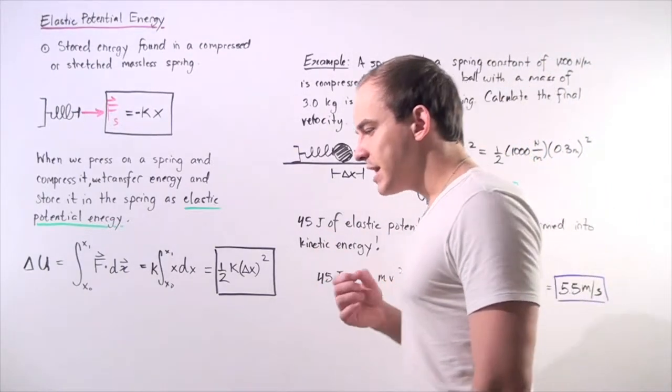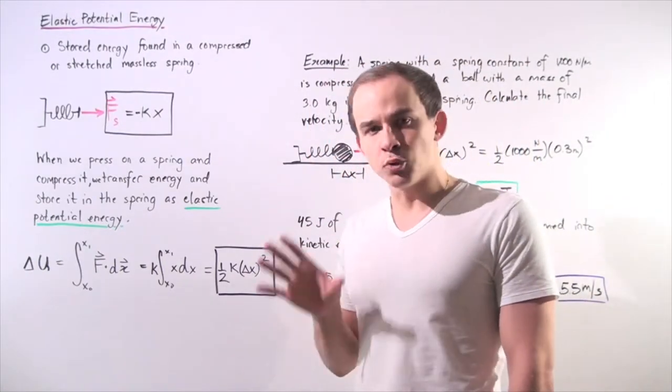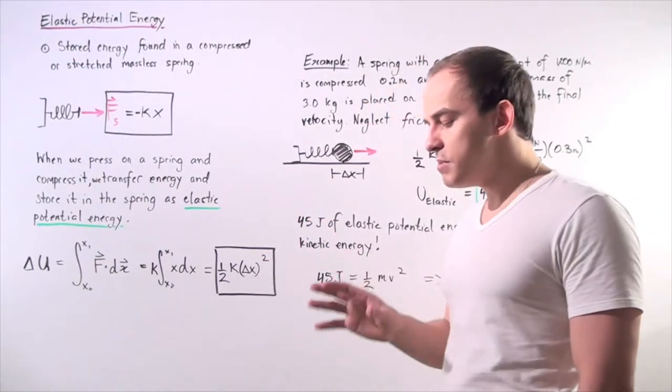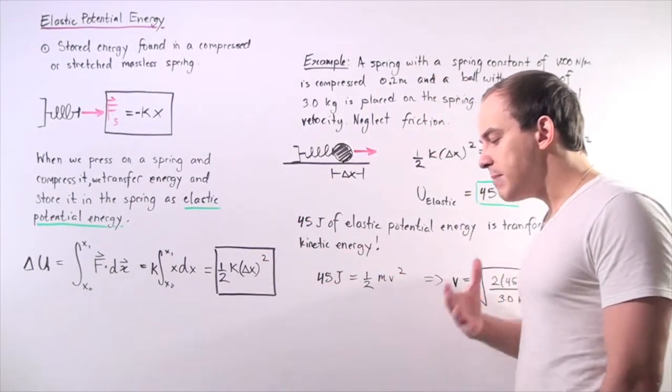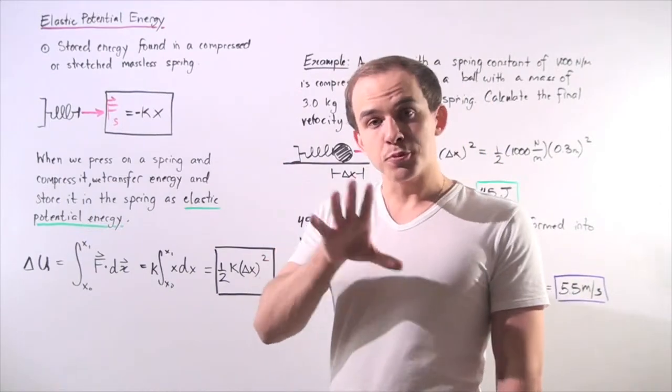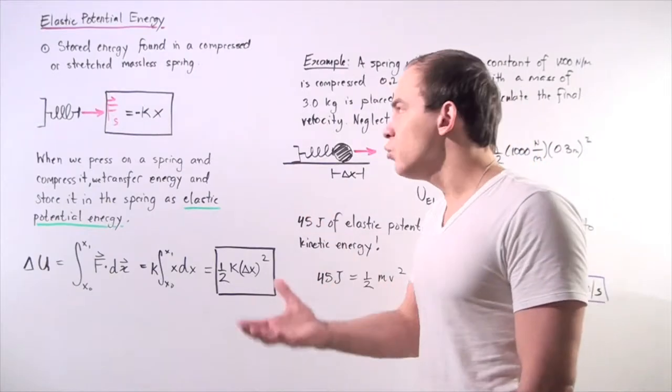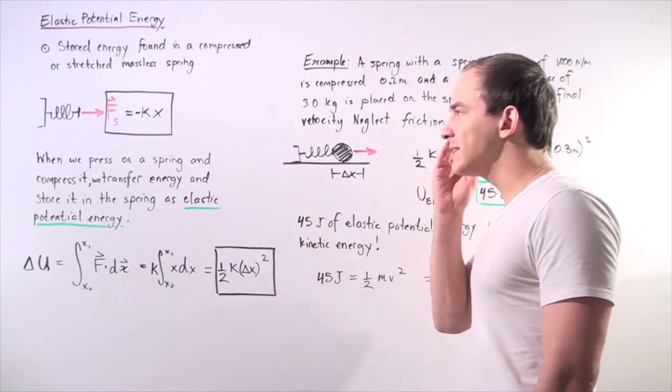Elastic potential energy is the energy that is stored in a compressed or stretched spring that is assumed to be massless. We can make that assumption because the mass of the spring is usually much smaller than the mass of the object on which our spring is acting.